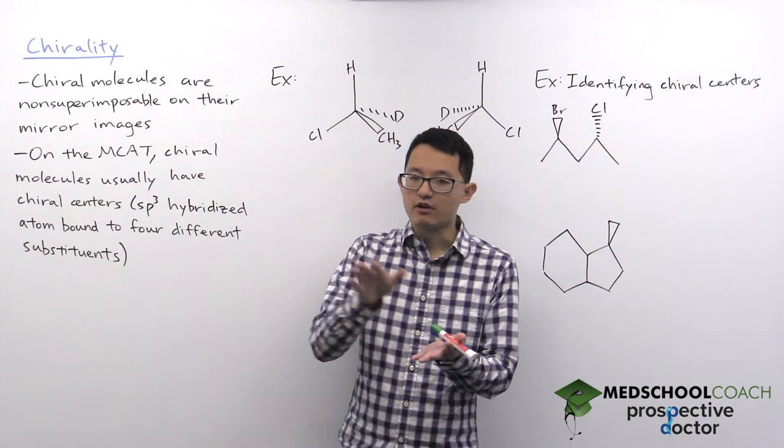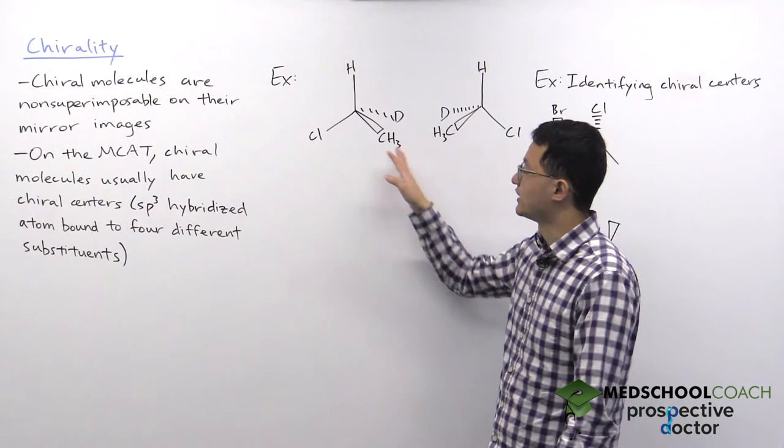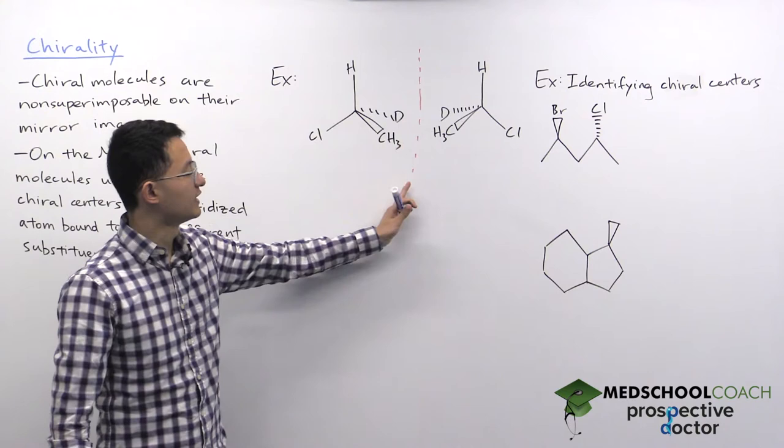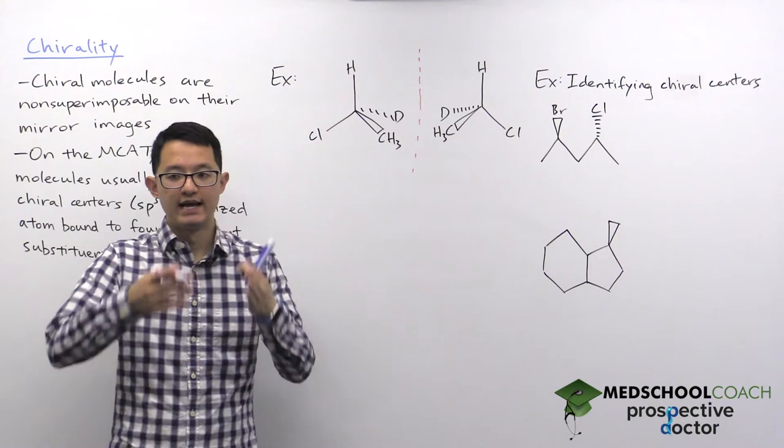Non-superimposable means if you stack the two molecules on top of each other, they don't perfectly match. We have an example here of two molecules that are mirror images. You can tell they are mirror images when you look at this plane—everything matches if you look at both sides of this plane.